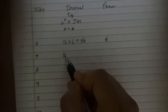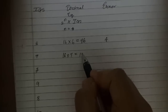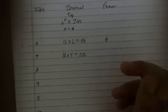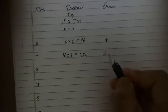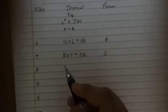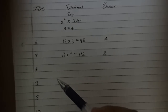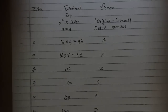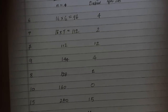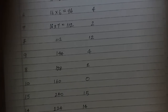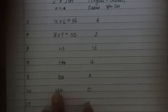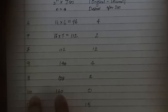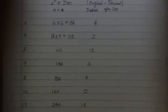Calculating the decimal equivalents and errors for all remaining data elements, the error values range from less than 20 at maximum down to a minimum error of 0, which occurs for 160 — its IGS code is 10, and 16 × 10 = 160, matching the original exactly. This concludes the topic of IGS coding.